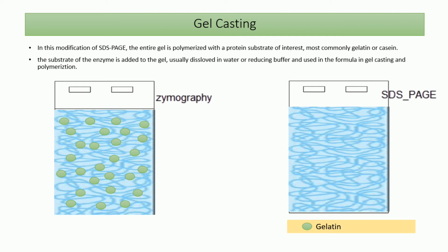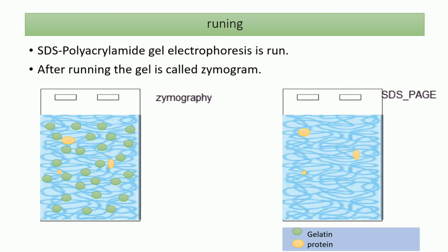Substrates such as casein or gelatin will be evenly distributed throughout the resolving gel. The next step is loading the proteins and running the gel. After that, proteins are separated based on their molecular weight — the smallest proteins migrate fastest through the polyacrylamide gel in both SDS-PAGE and zymography.